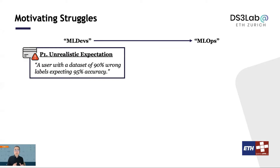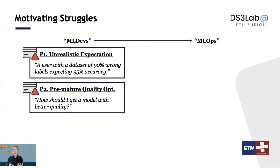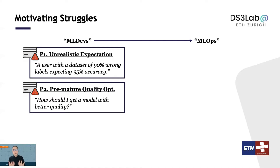The second struggle is what we call premature quality optimization. It happens when a user tries to improve the quality of a machine learning model during development. To improve a machine learning model, the user can do a whole bunch of things such as data cleaning, data labeling, and acquisition. Unfortunately, we often see users get confused on what the right thing to do is among this great collection of choices. And sometimes we see users waste effort doing something that will not give them a significant improvement of the model quality. As you can imagine, the users' lives are not getting any easier during deployment and maintenance.